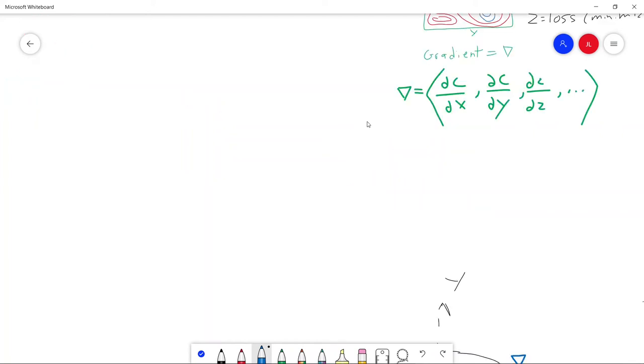So you might be asking, how do you actually update your weights? How do you move down the gradient? And this is done through what's called the update rule.